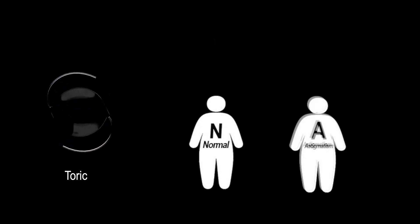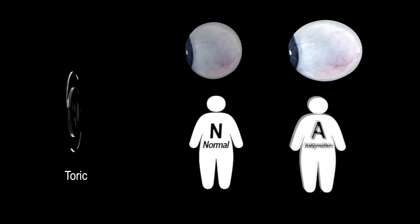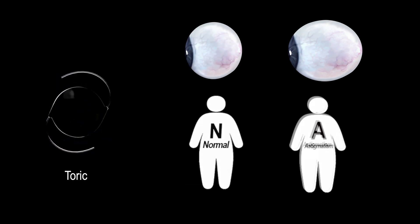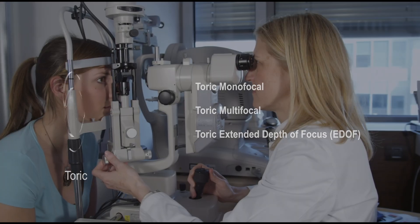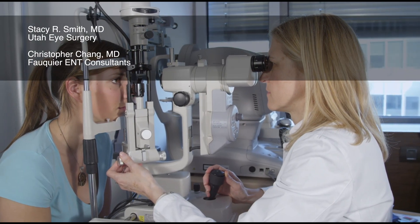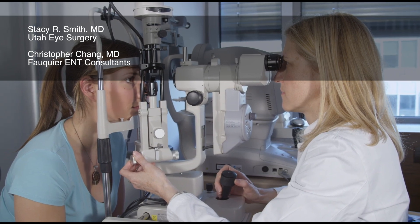Finally, toric lens is an IOL implant that also corrects for any underlying astigmatism. Astigmatism is when the eyeball is more egg-shaped rather than spherical, which causes blurred vision due to the varying curvature. Toric monofocal, multifocal, and extended depth of focus lenses are available. Talk to your eye doctor regarding which intraocular lens would work best for you.